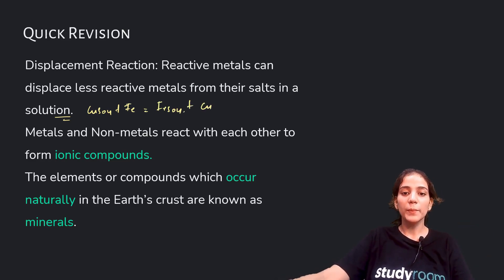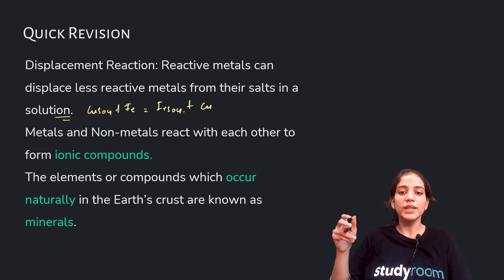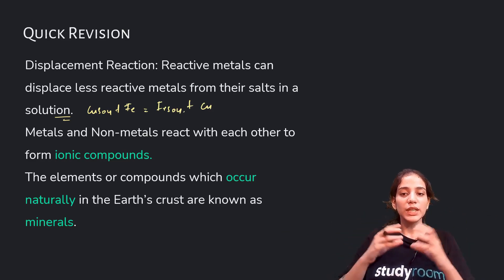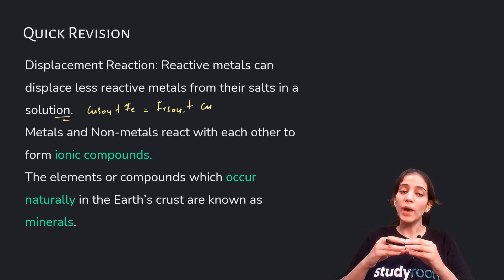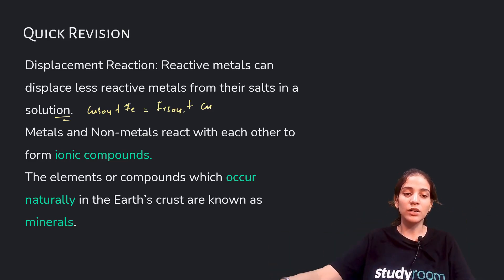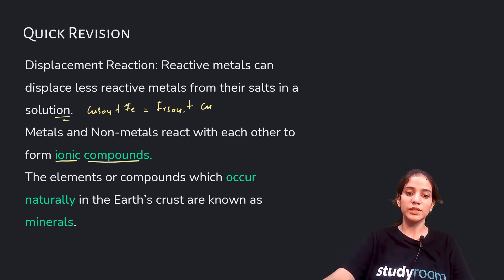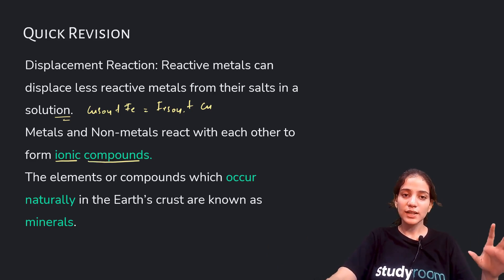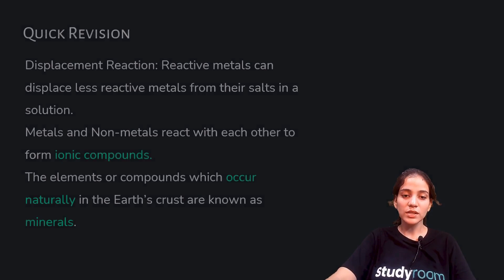Metals and non-metals react with each other to form ionic compounds, and they are held tightly with electrostatic forces. The elements or compounds which occur naturally in the earth's crust are known as minerals.